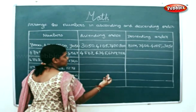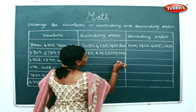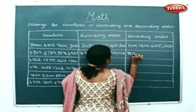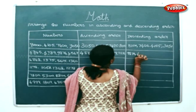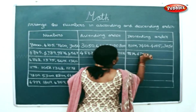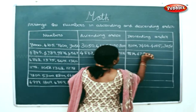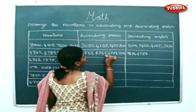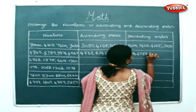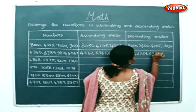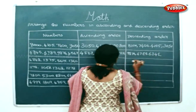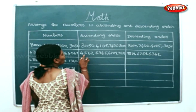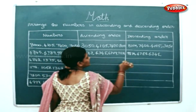Descending order is just the reverse of the ascending order: 9, 8, 7, 6; 6, 7, 8, 9; 6, 3, 4, 5. And least will be 4, 5, 6, 7.